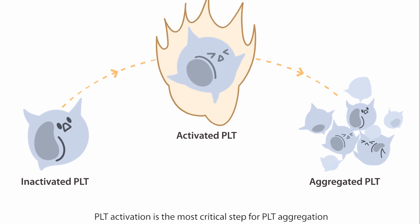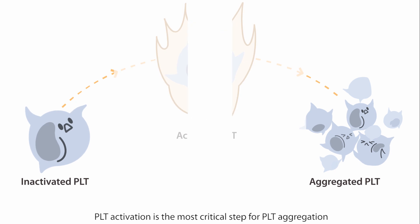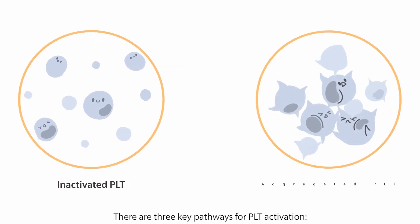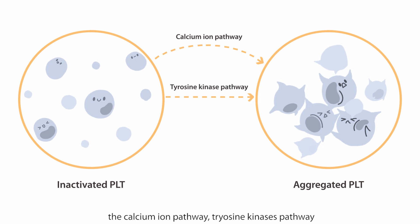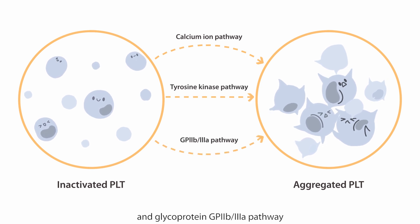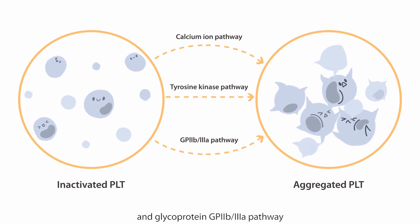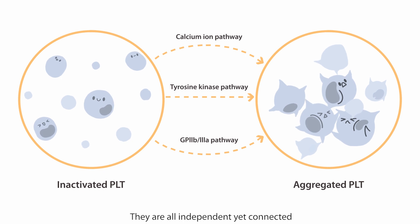PLT activation is the most critical step for PLT aggregation. There are three key pathways for PLT activation: the calcium ion pathway, the tyrosine kinases pathway, and the glycoprotein GP2b-3a pathway. They are all independent, yet connected.